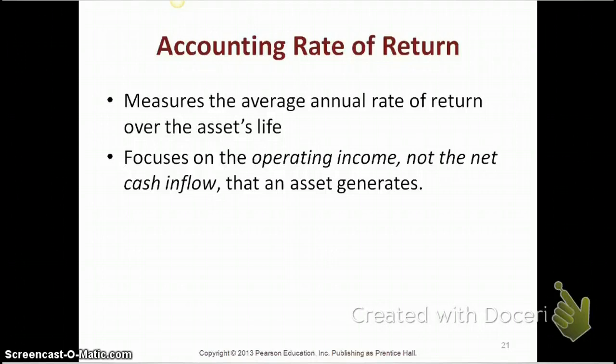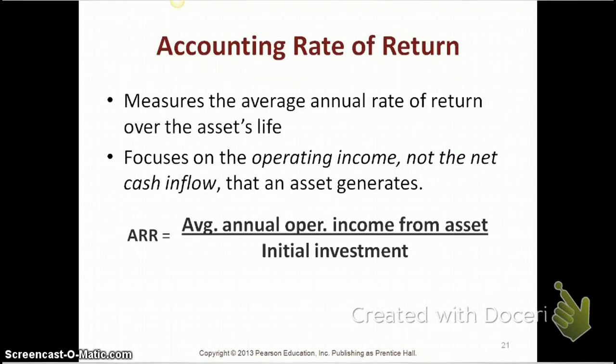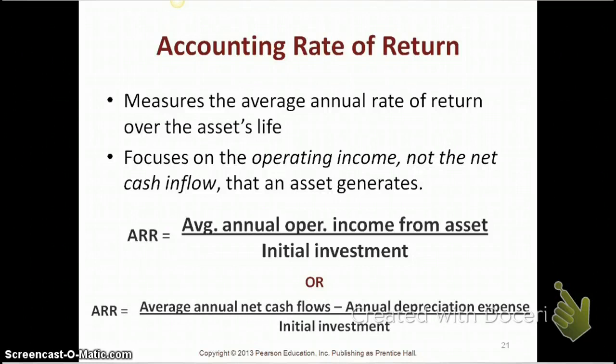Every question will give you the net cash inflows, and you need to convert those cash inflows to operating income — your formulas will help you do that. The formula for calculating your accounting rate of return is average annual operating income from your asset divided by initial investment. Since questions typically give you cash, not accounting income, to convert cash inflows to accounting income, you subtract your depreciation expense. So the formula can also be stated as: average annual net cash flows minus annual depreciation expense, divided by initial investment.